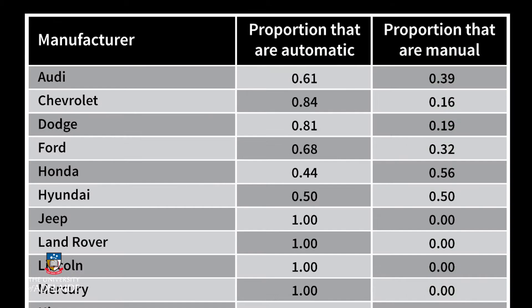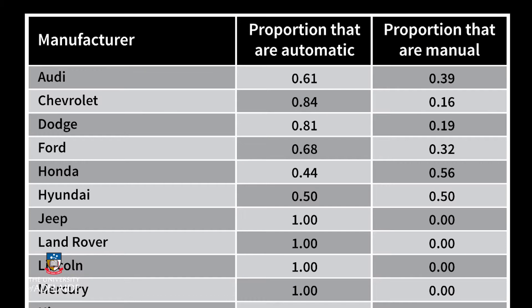The conditional table is then calculated so that we can see 61% of Audi's cars are automatic and 39% are manuals. We calculated this by dividing the number of Audi's cars that are automatic — 11 — by the total number of Audi cars. In other words, we divided each entry in the contingency table by the marginals. Notice that each row adds to 1.